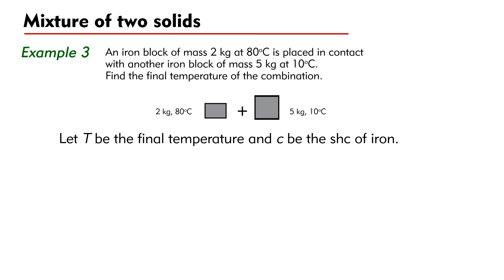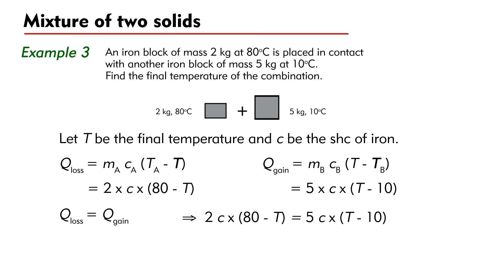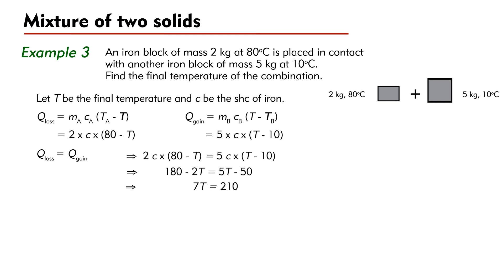Let T be the final temperature of the combination, and let C be the specific heat capacity of iron. Heat loss by the hot iron block is Q_loss equal to 2 times C times (80 minus T). Heat gain by the cold iron block is Q_gain equal to 5 times C times (T minus 10). Assuming no heat loss to the surroundings, by conservation of energy, we have 2 times C times (80 minus T) equal to 5 times C times (T minus 10). This gives 160 minus 2T equal to 5T minus 50, therefore 7T equal to 210. So the final temperature of the combination is T equal to 30 degrees Celsius.